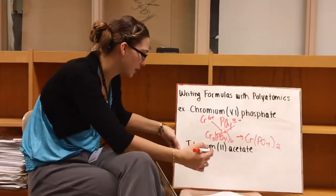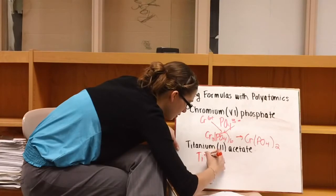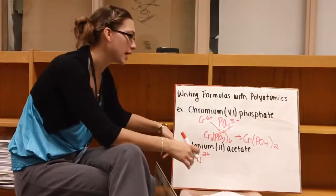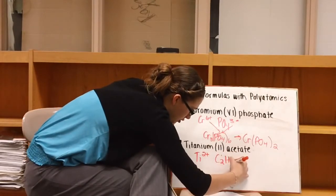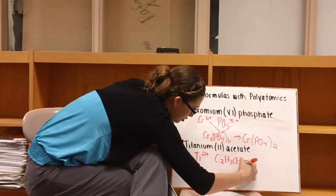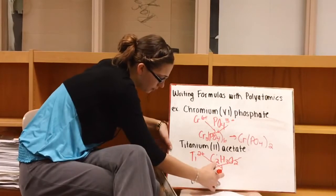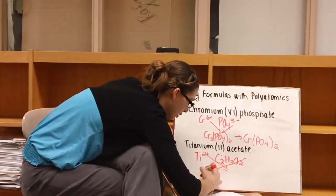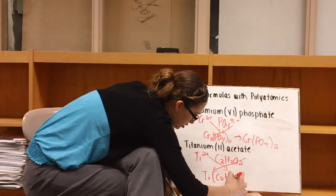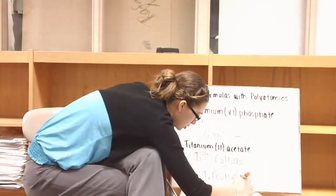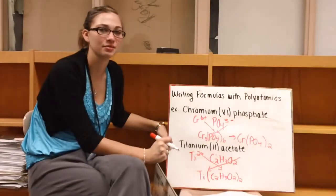Alright, last one. We have titanium(II) acetate. So it would be titanium 2+. And then acetate, which is C2H3O2-. So if we crisscross our charges, we would have Ti(C2H3O2)2. So once again, our polyatomic ion is in parentheses.